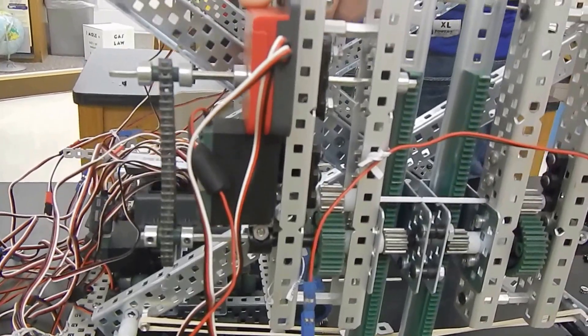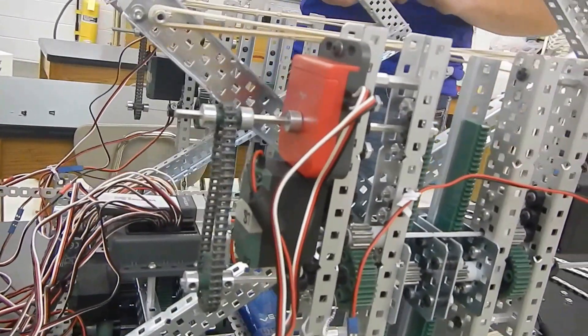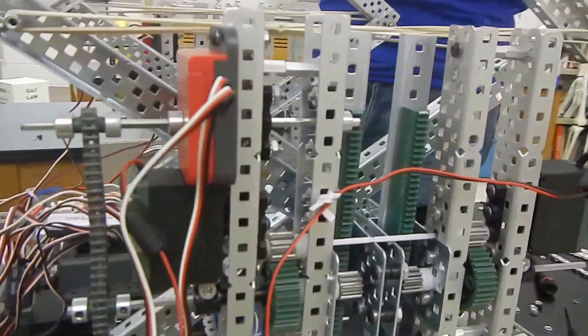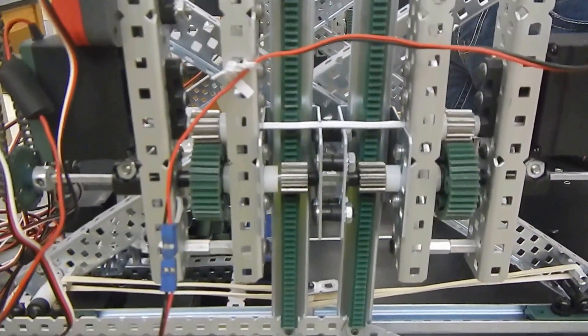And over here we added quad encoders to make it go up straight and level, so both sides aren't tipping all over the place and uneven, so it should go up straighter.